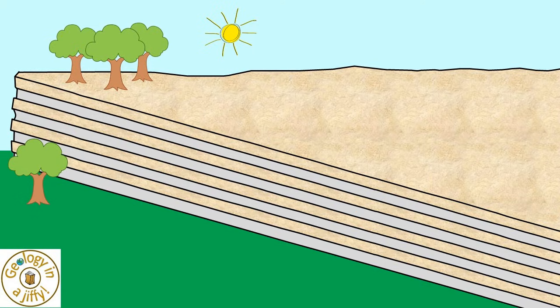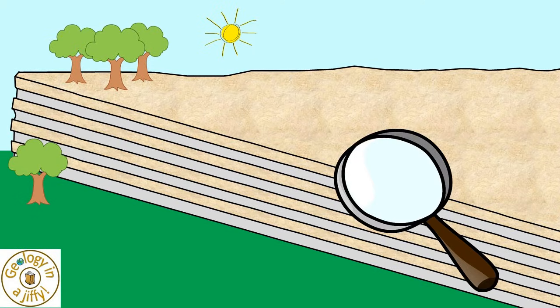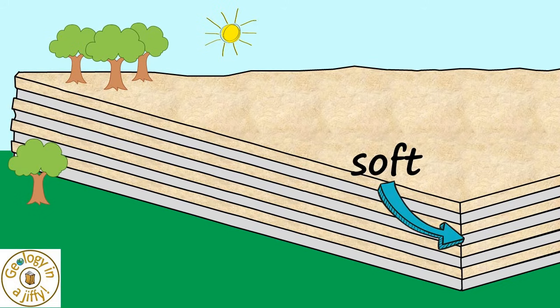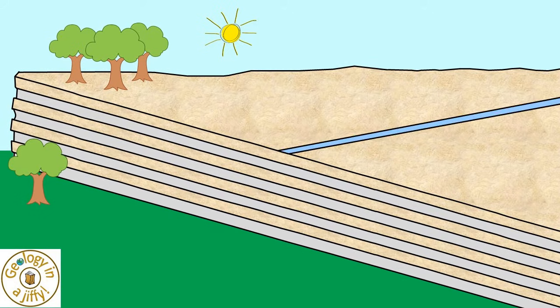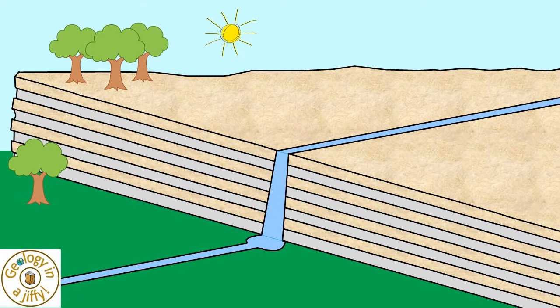Imagine a large plateau which, if we study it, we can see it is built up of interbedded layers of hard and soft layers of rock. Across this flows a river. The river flows over the edge of the plateau, forming a waterfall.